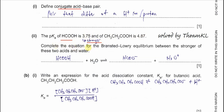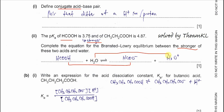The question asks to complete the Brønsted-Lowry equilibrium equation between the stronger of the two acids and water. So we choose methanoic acid with water. Methanoic acid releases one proton to form its conjugate base (the salt), and H₂O gains the proton to form the hydronium ion. These form two conjugate acid-base pairs.